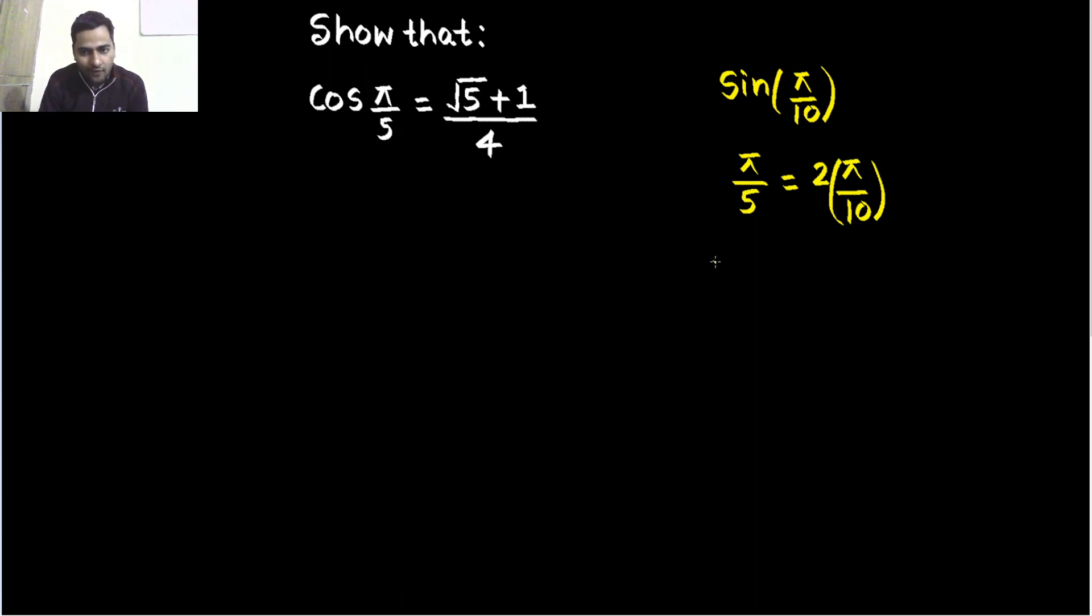Now in trigonometry, do we have any formula in which you have cos of twice of something relating to sin? Can you remember this? Yes, of course we have a formula. This formula, I hope you can recall it now: cos 2x is 1 minus 2 sin² x. Now today we are going to make use of this formula, because we already know the value of sin π/10, that is √5 minus 1 by 4. These are looking a bit similar, plus and minus. Now cos 2x is this, let's make use of this.